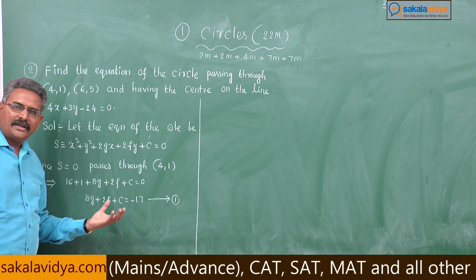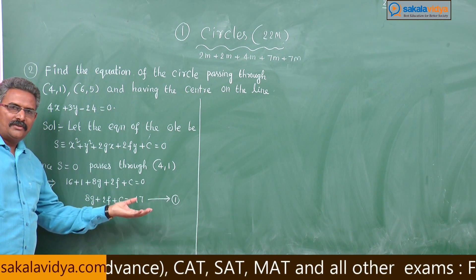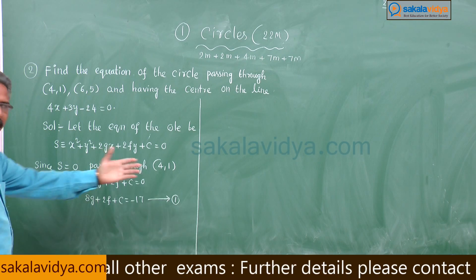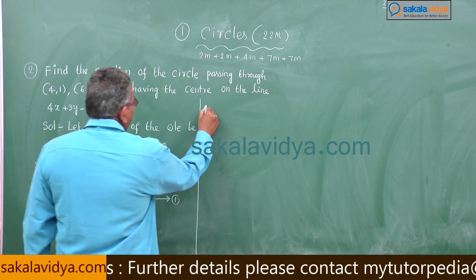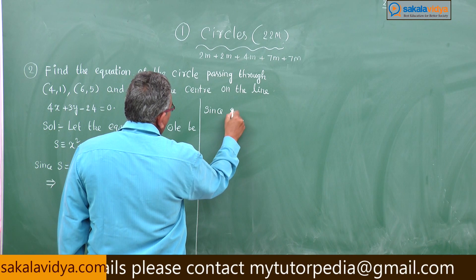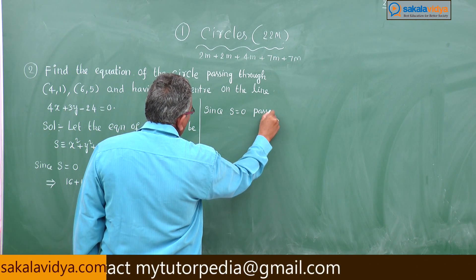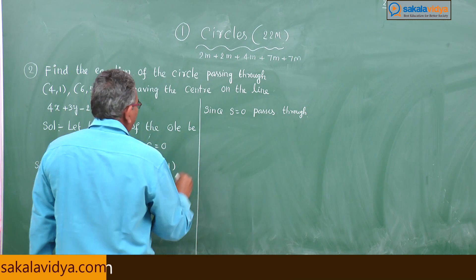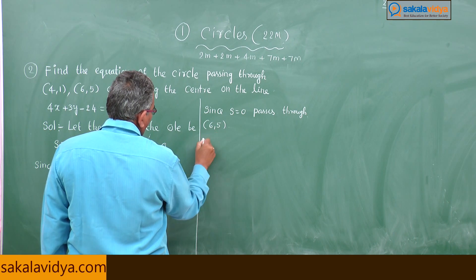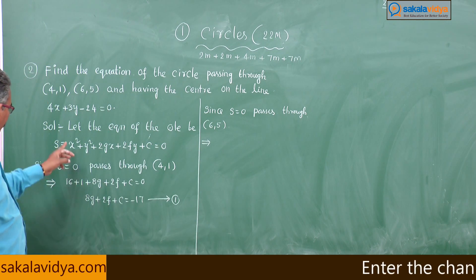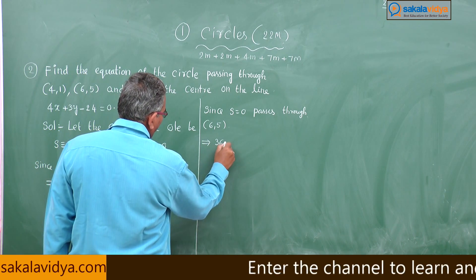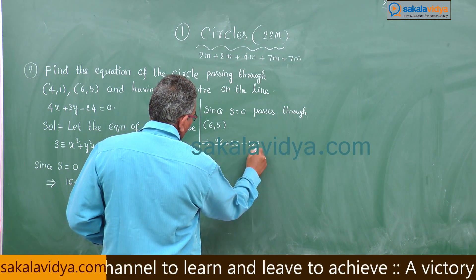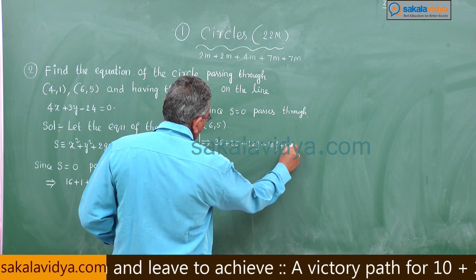If you have any doubts or queries you can post your comments, or you can discuss with your teachers, lecturers, or friends. Now, since S = 0 passes through (6,5), substituting gives 36 + 25 + 12g + 10f + C = 0.